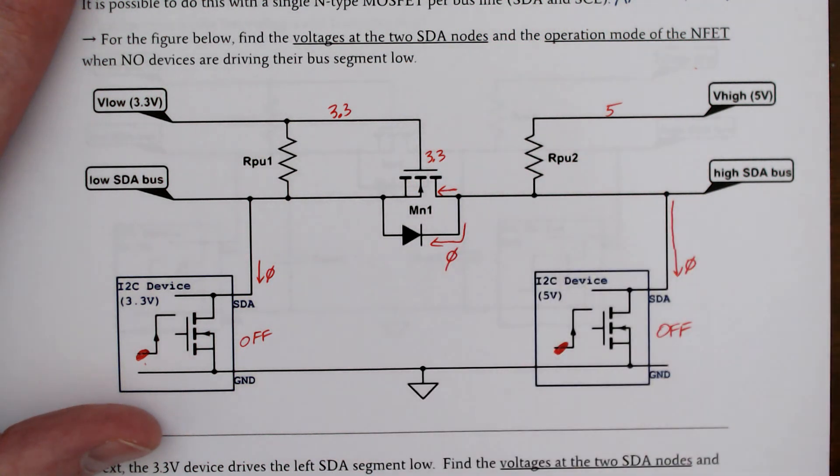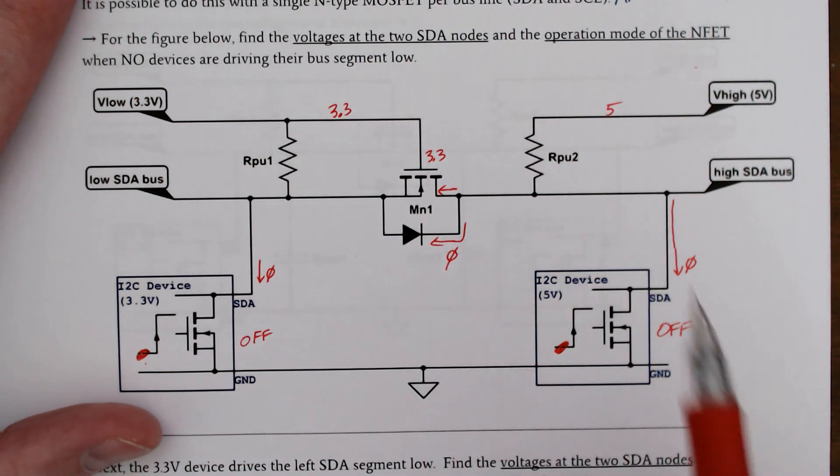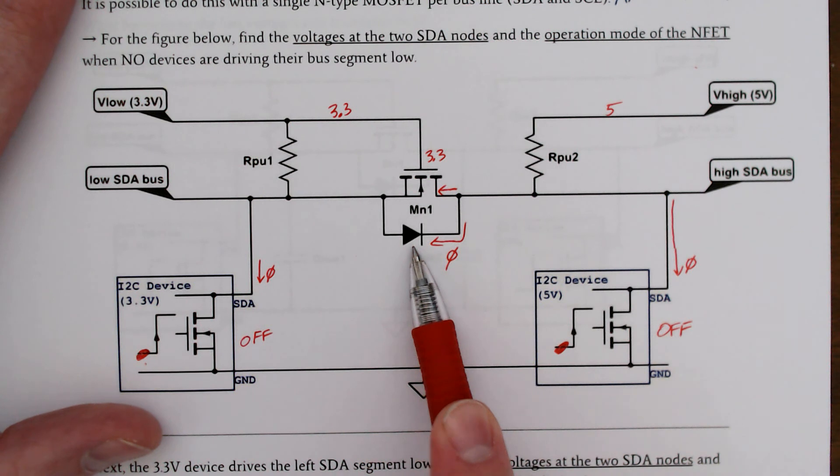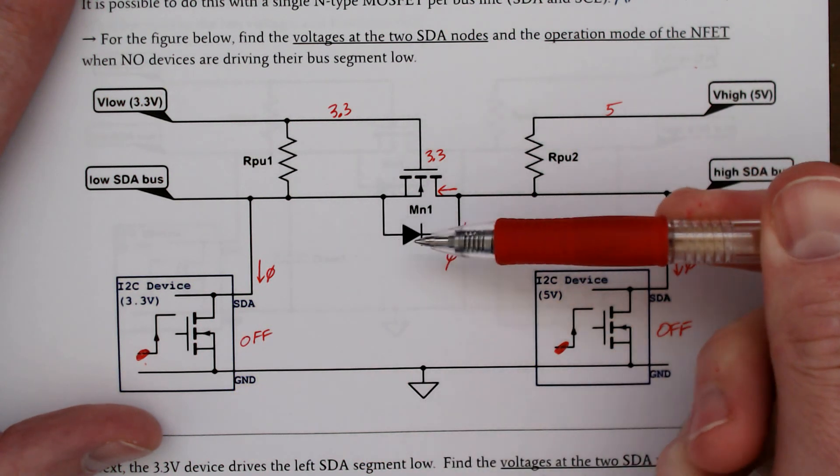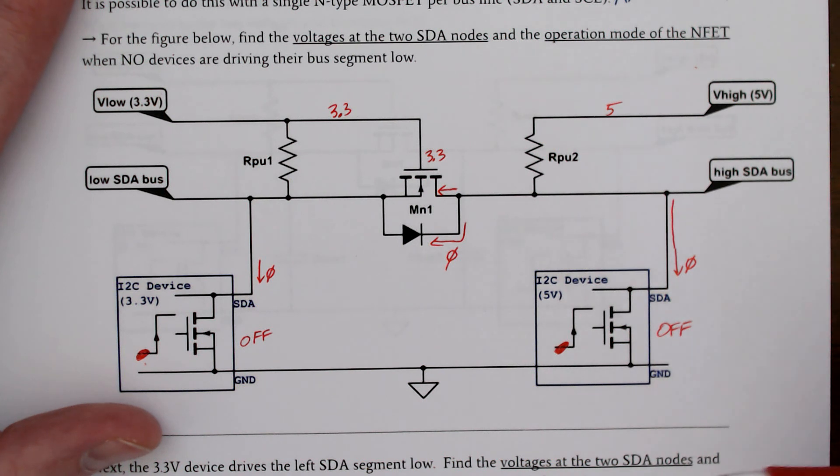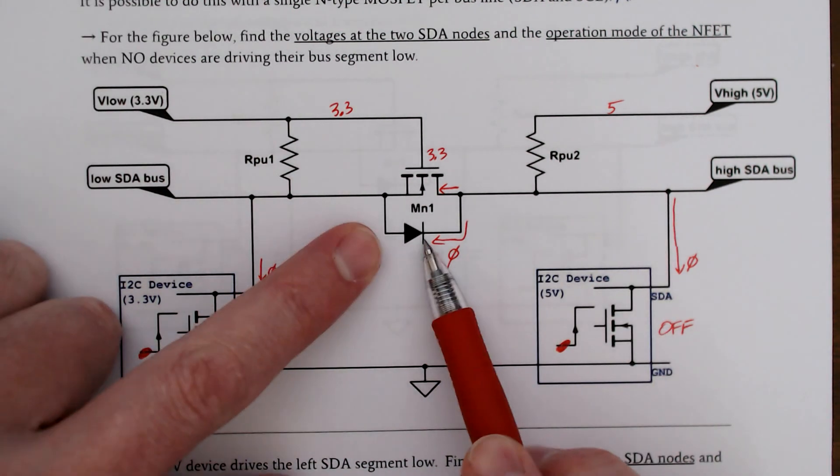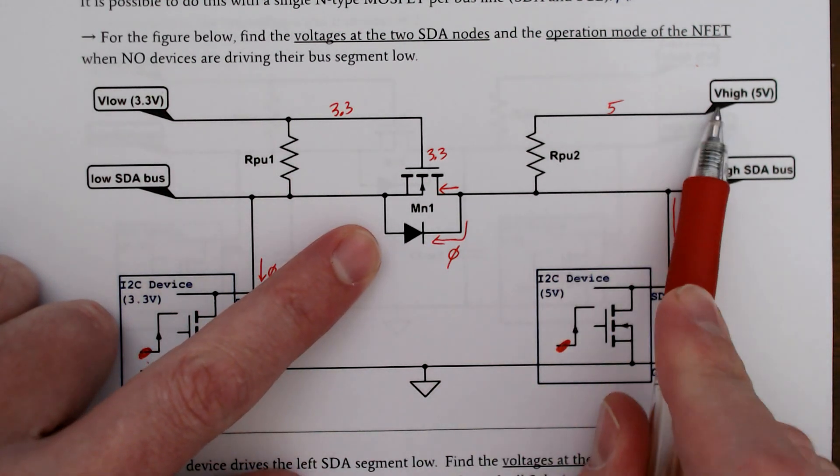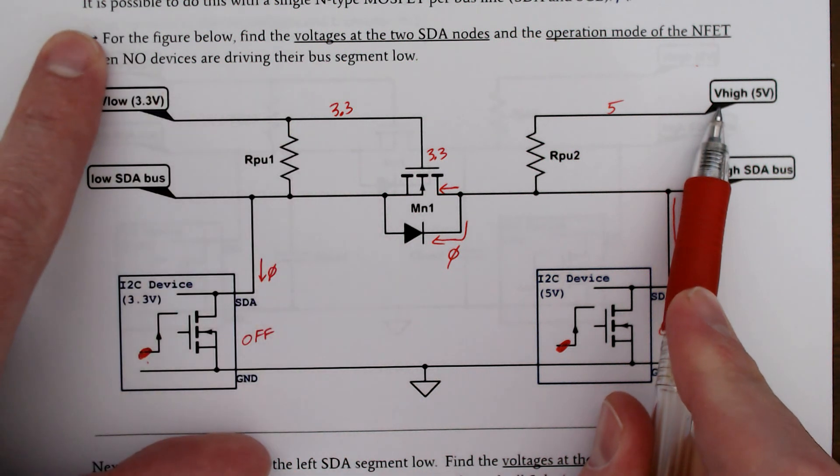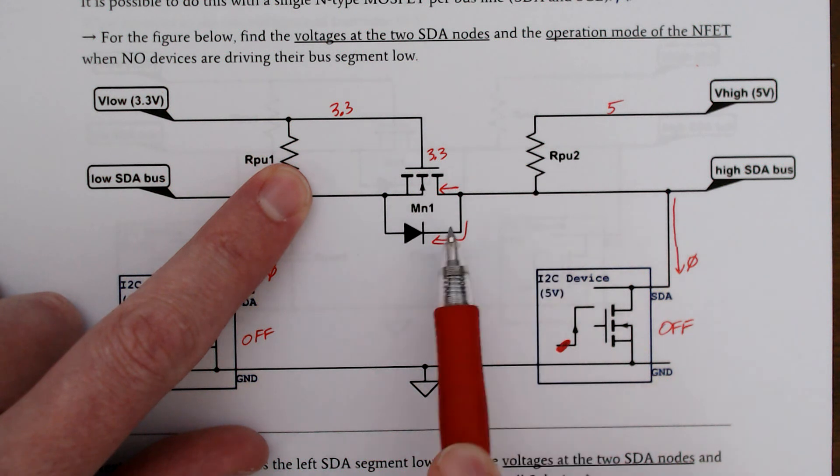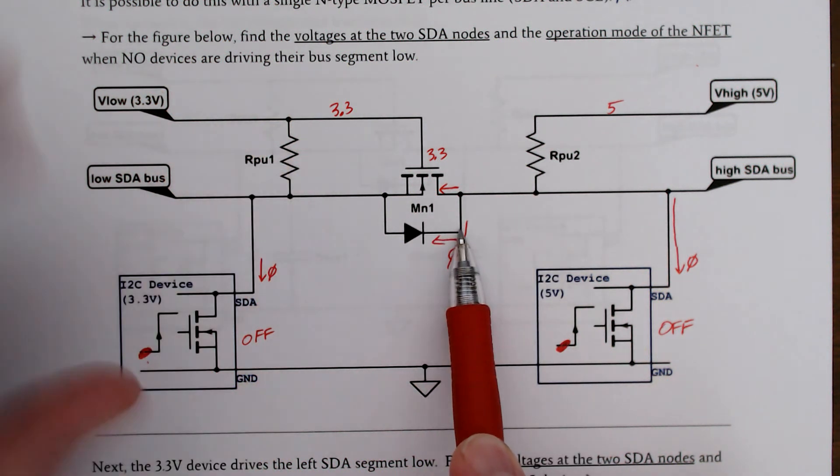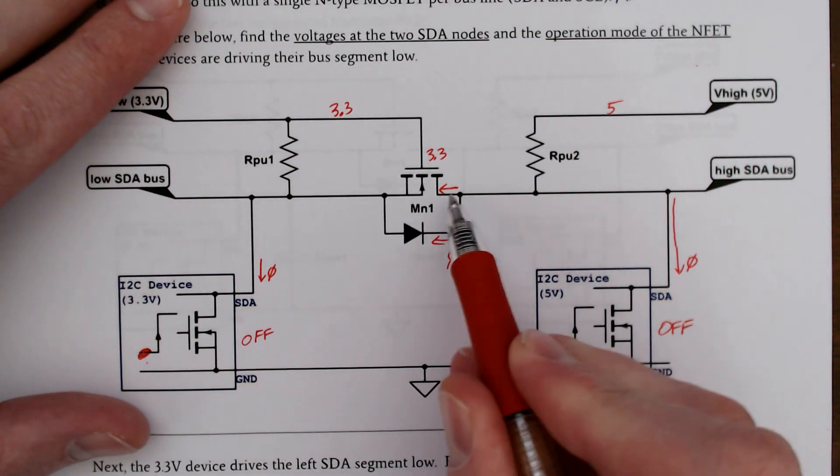One thing I do know when I do Kirchhoff's current law at this node is that this current is going to be zero. One way we can see that this is zero is, I call this the Gandalf diode. Gandalf says you shall not pass. No current going that way. And also we're going to have this junction reverse biased. You can see that we've got 5 volts here and 3.3 volts here. These pull-up resistors, the cathode is going to be at a higher potential.